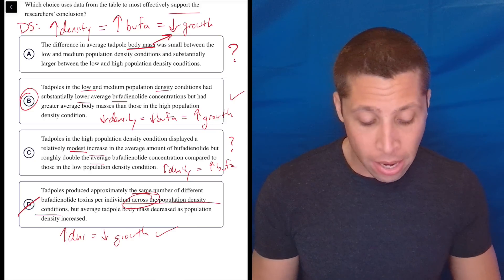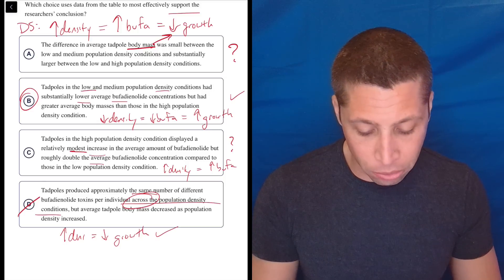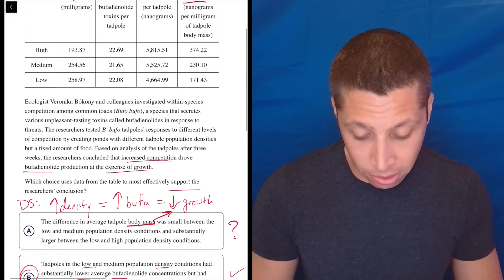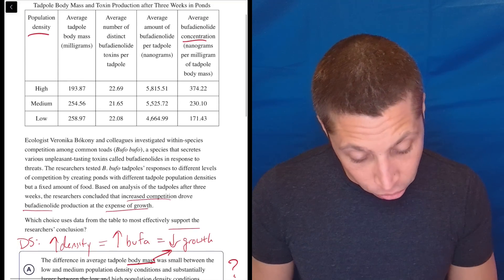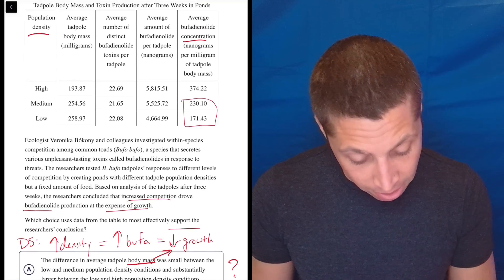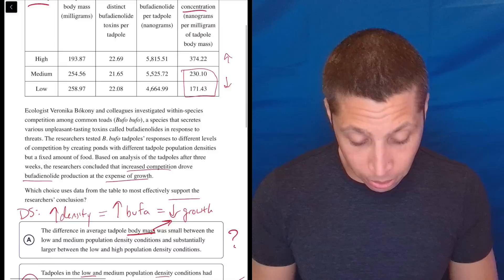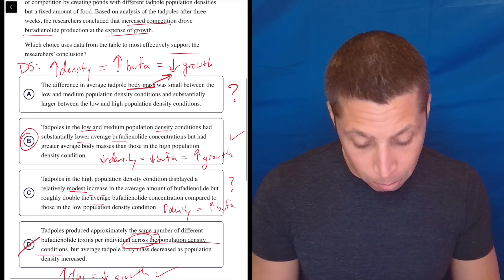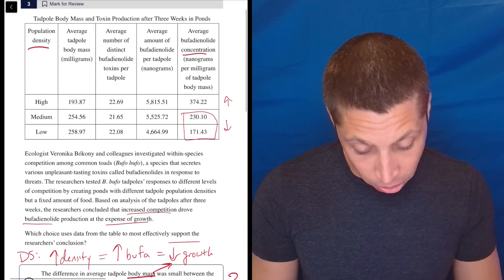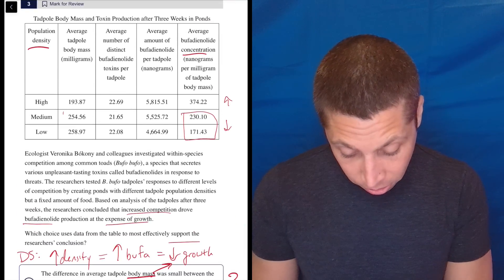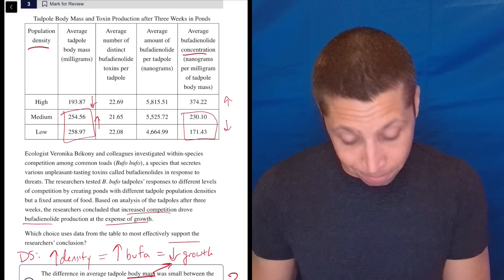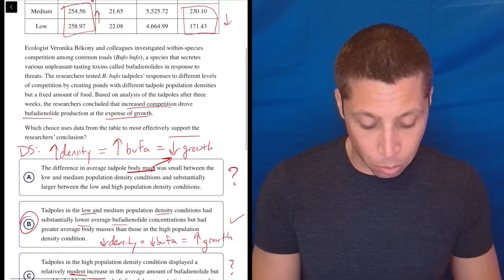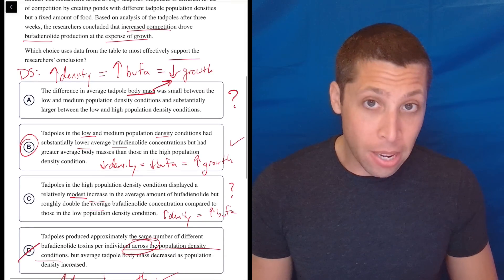So I would pick B. Just to really bring it home, though, let's double check. Tadpoles in the low and medium population density had substantially lower bufa concentrations. So bufa concentration is here. That is lower than this one, right? So, okay, that seems good. But had greater average body masses. So body mass is right here. So these two are greater than this one. Yeah, that seems right. And that's the right relationship, which we already saw. So, yes, B is now proven.